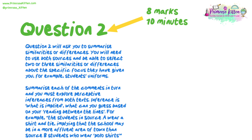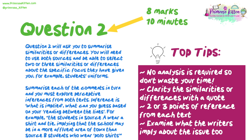Question 2 asks you to summarise similarities or differences and is worth 8 marks, meaning you should spend no longer than 10 minutes on it. You will need to use both sources and select 2 or 3 similarities or differences about the specific focus given — for example, the students' uniforms. Summarise each comment in turn and explore perceptive inferences from both texts. Inference is what is implied — what can you guess from reading between the lines? For example, students in Source A wearing a shirt and tie implies the school may be in a more affluent area than Source B students who wear polo shirts. Top tips: no analysis required, so don't waste your time; clarify similarities or differences with a quote; two or three points of reference from each text; examine what the writers imply about the issue.